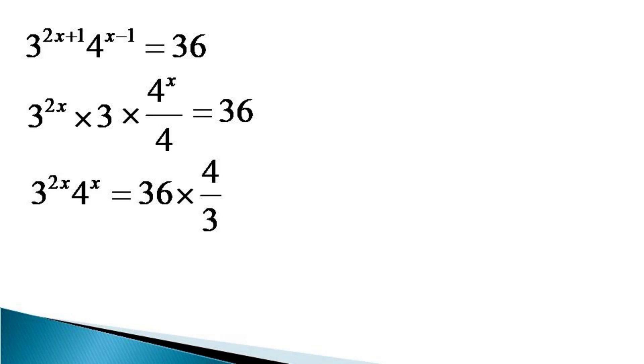3 raise to the power 2x can be expressed as 3 square raise to the power x and 4 raise to the power x is multiplied to it and the right hand side becomes equal to 48.